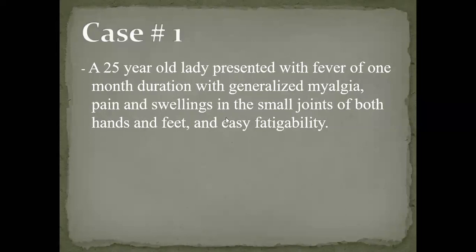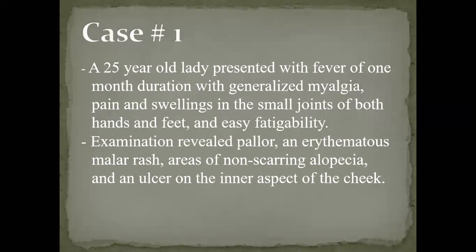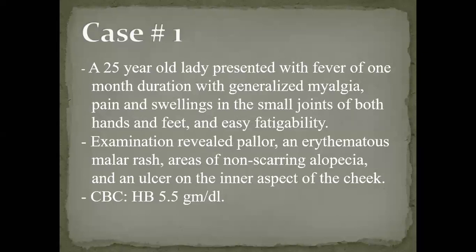She has myalgia and arthritis in the small joints along with easy fatigability. Examination revealed pallor, an erythematous malar rash, areas of non-scarring alopecia, and an ulcer on the inner aspect of the cheek. Hemoglobin was 5.5. To summarize: she has arthritis, fatigue, myalgia, rash, alopecia, oral ulcer, and anemia.